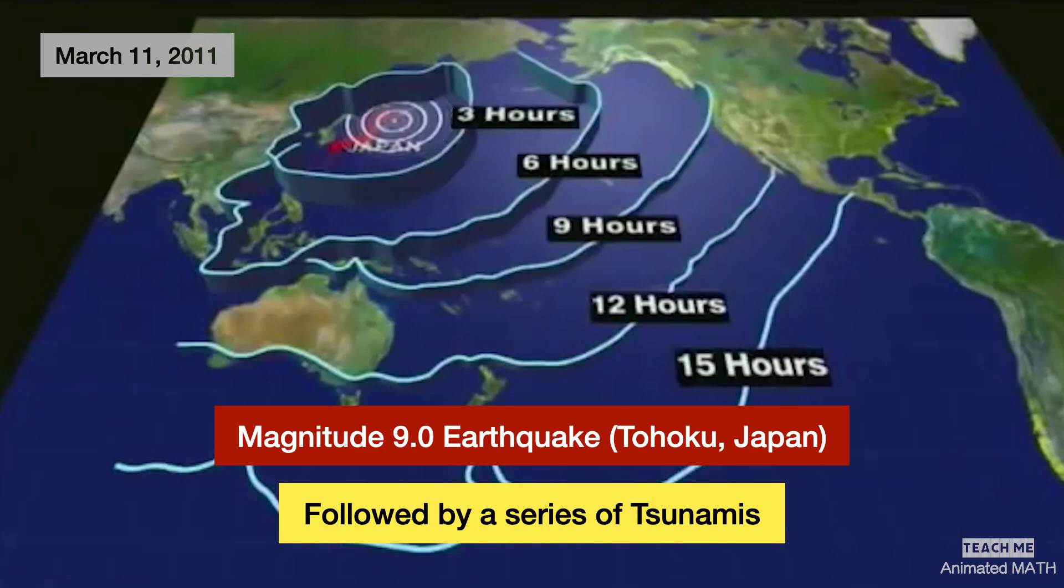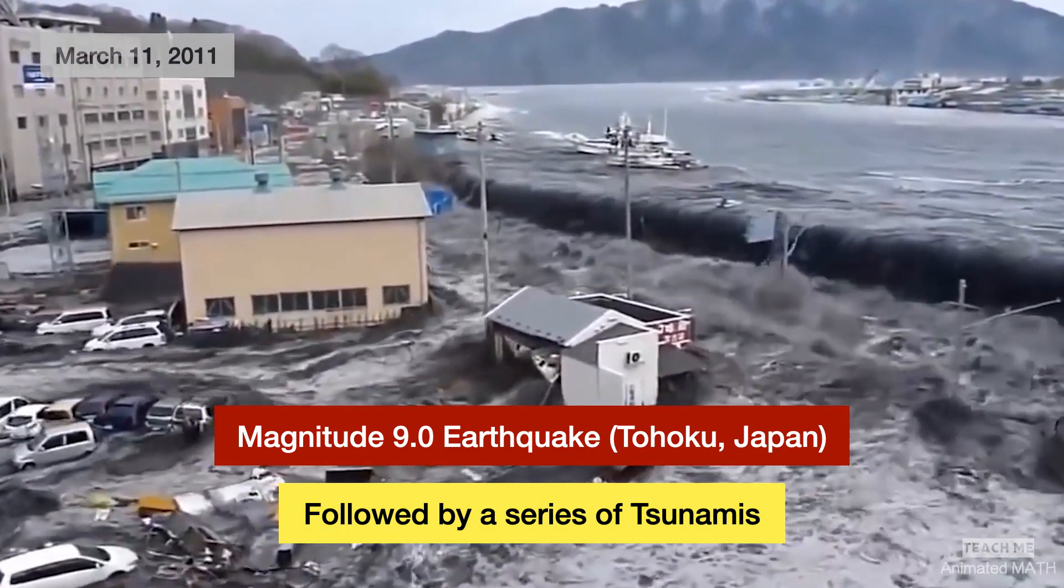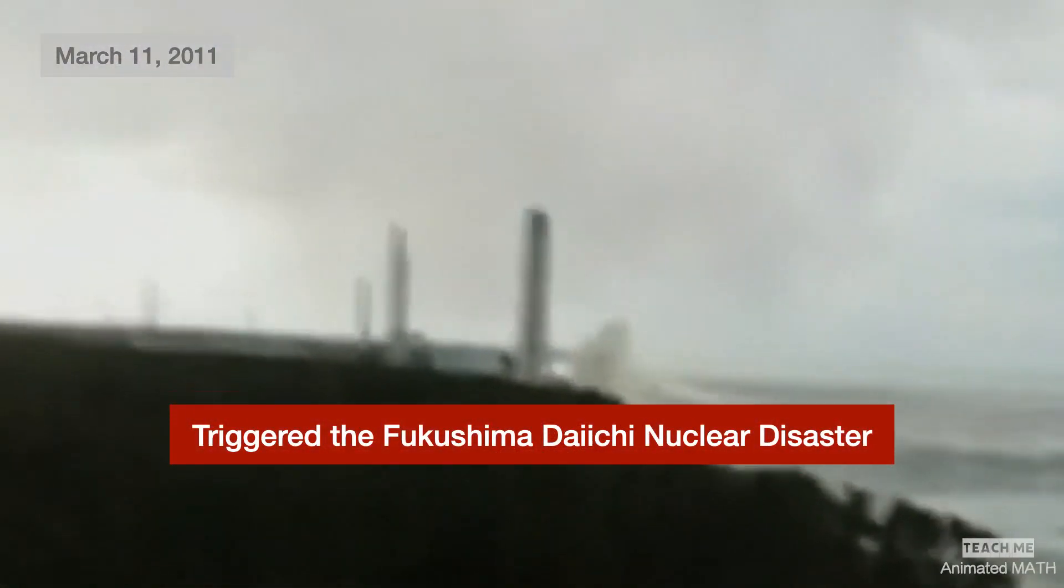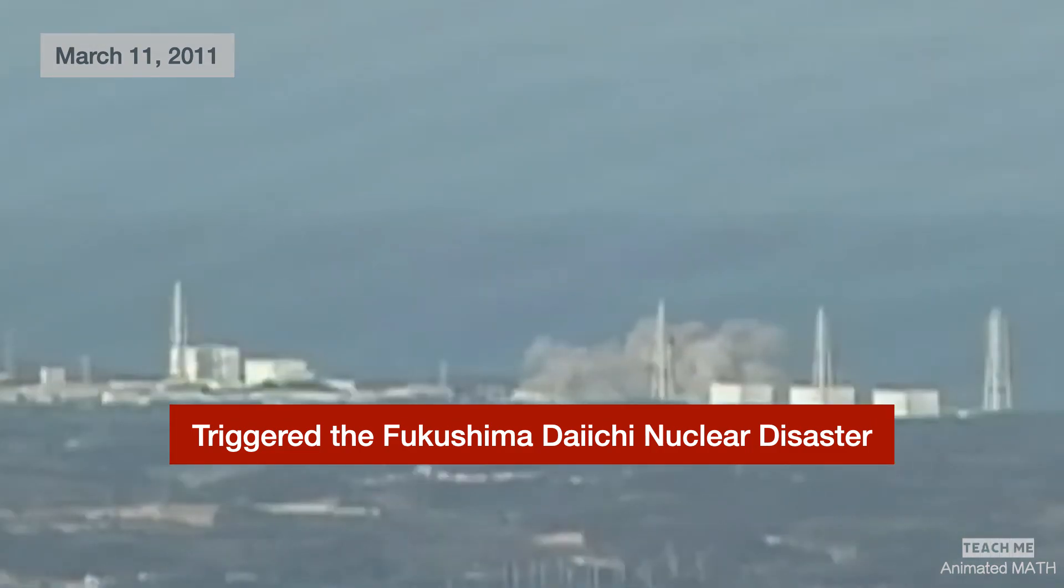On March 11, 2011, a strong earthquake and tsunami triggered the Fukushima Daiichi nuclear disaster.